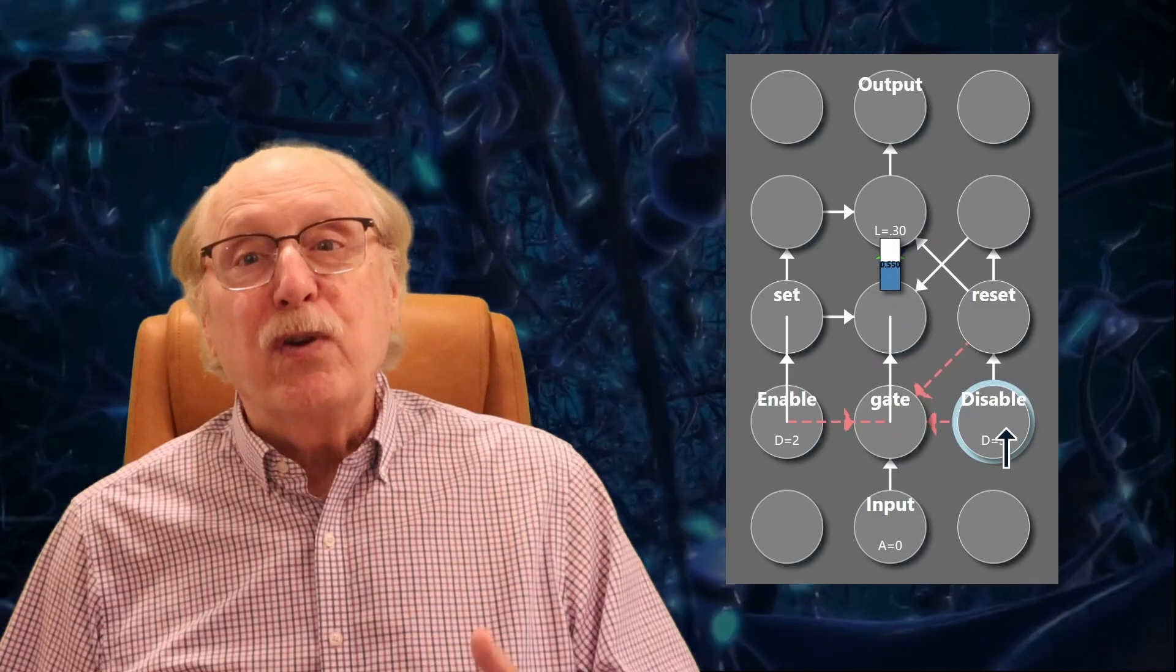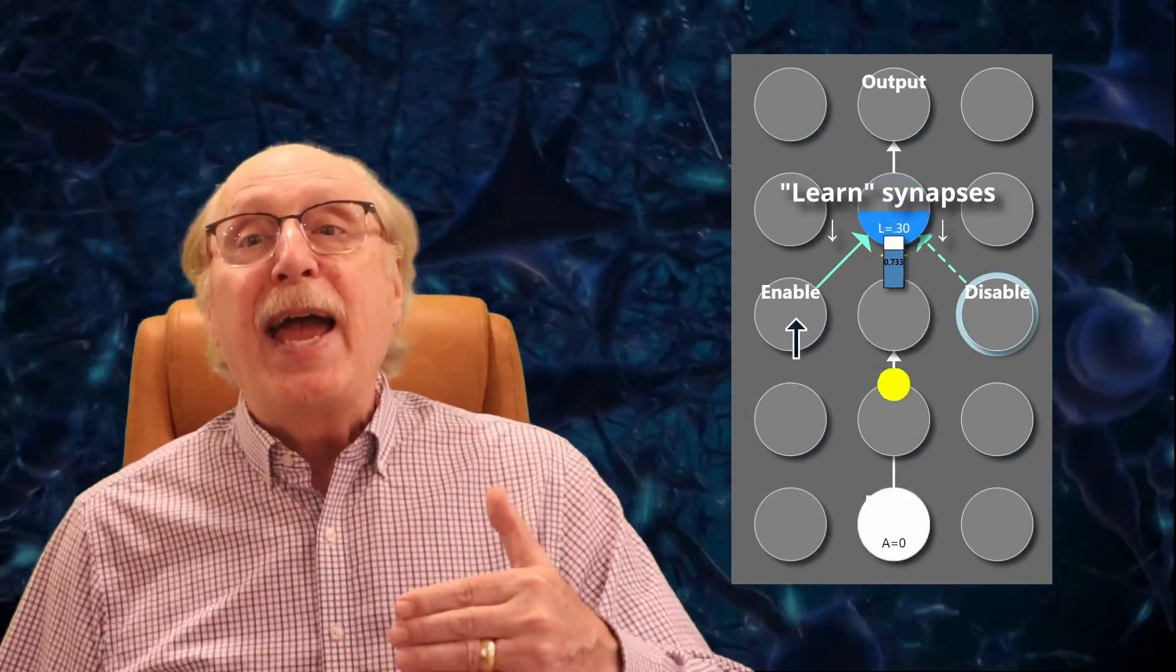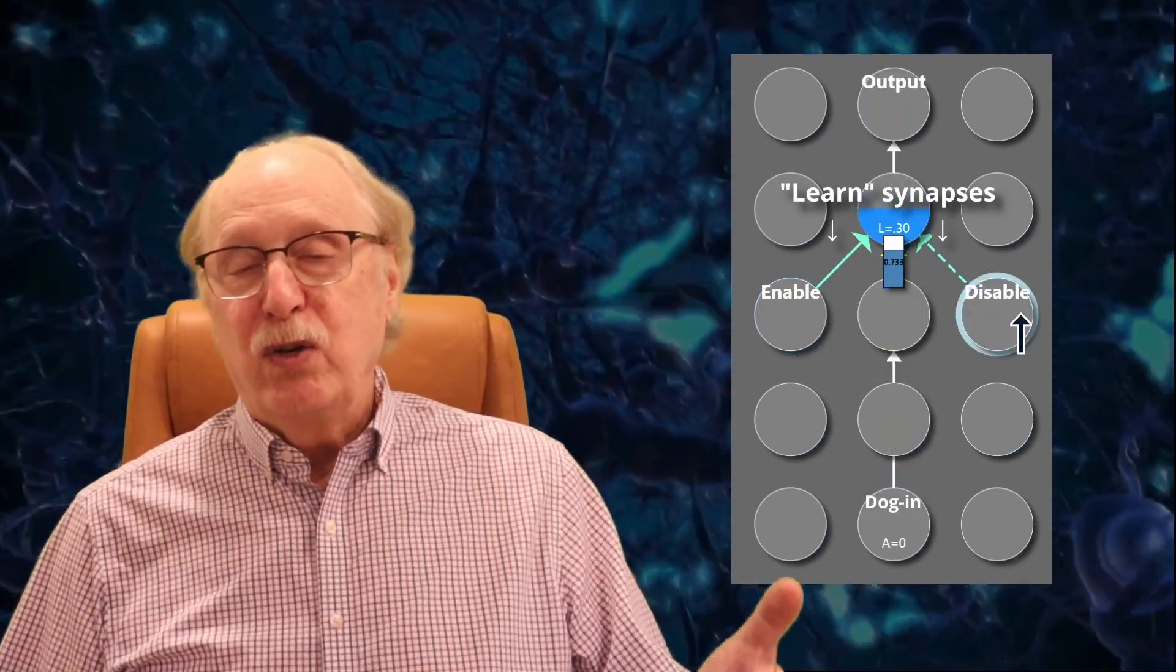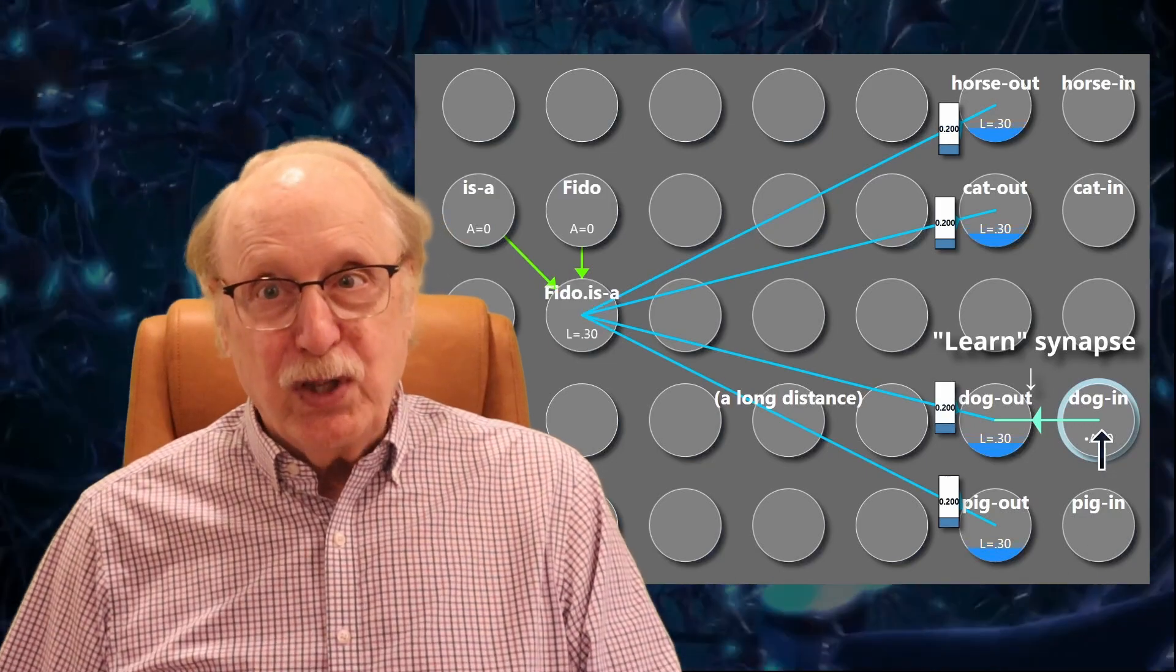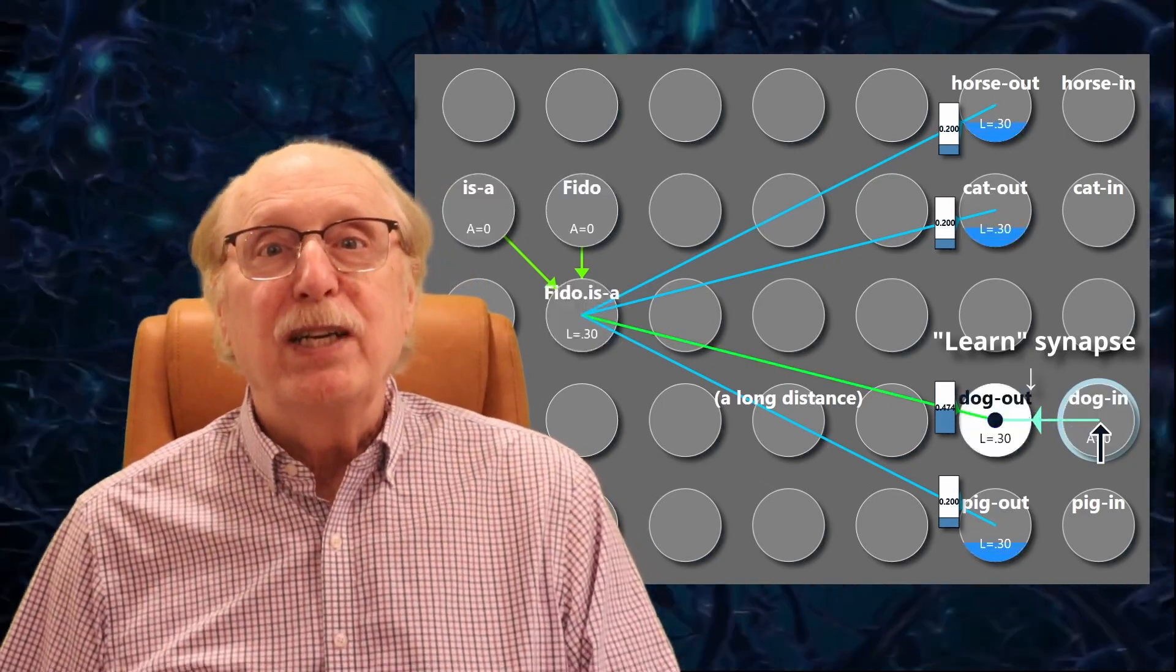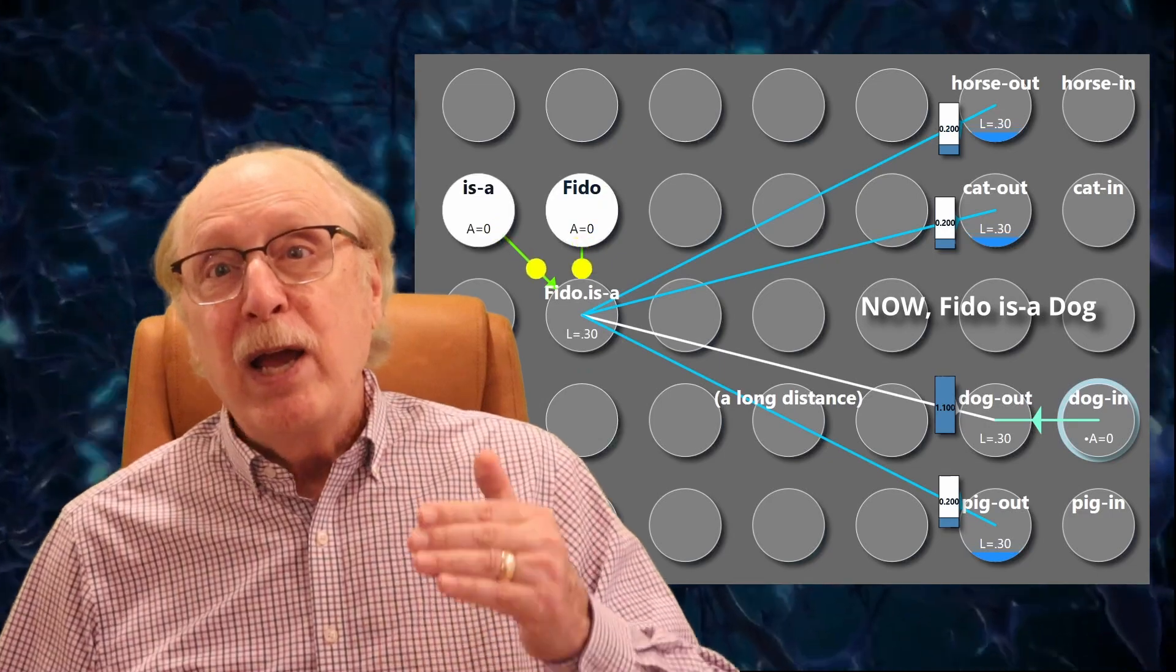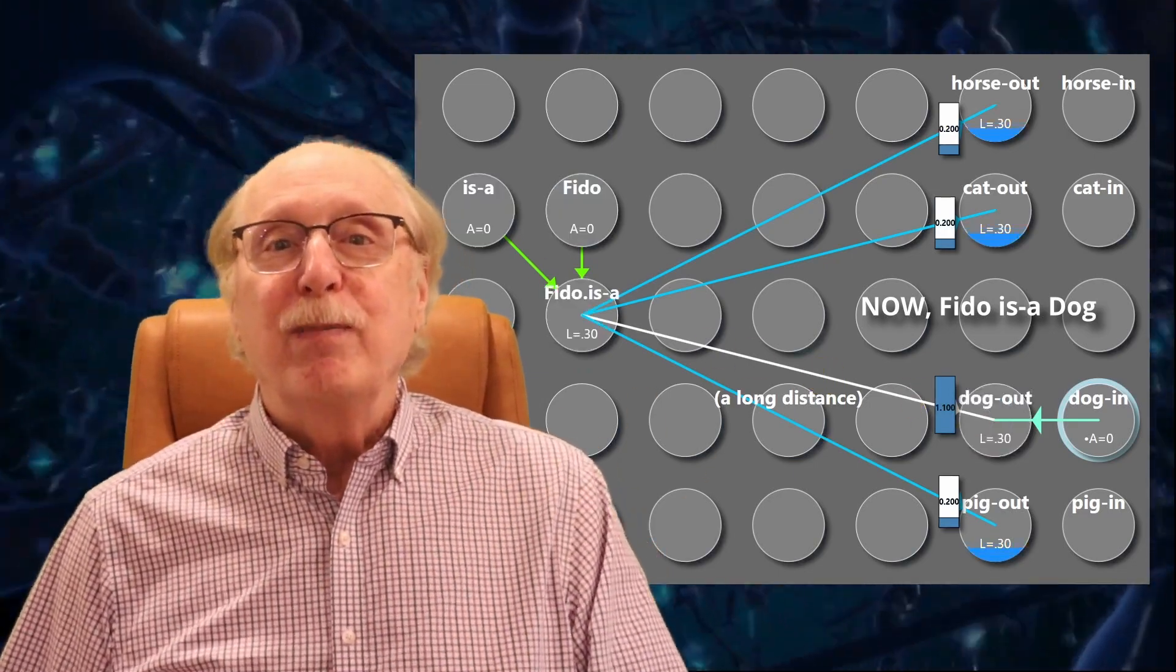We can simplify things further with the invention of a learned synapse. This combines the function of the extra neuron and the gate synapse. If the source of the learned synapse is firing, in this case, dog-in, then whenever phydo-izza fires, the synapse will strengthen. No synchronization required. These have a very useful behavior. If a learned signal was recently active, the synapse can temporarily force the target neuron to fire, even if the input is weak or unsynchronized. This might seem like a hack, yes, but it's an effective one. It lets us simulate learning from partial or delayed signals without requiring precise spike alignment. Clearly, your brain must do something like this, even if the specific mechanism is different.